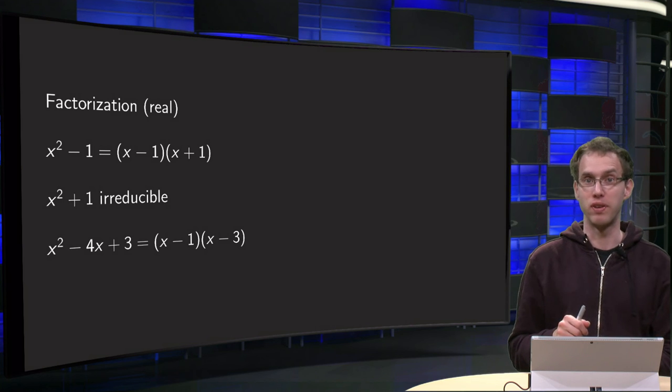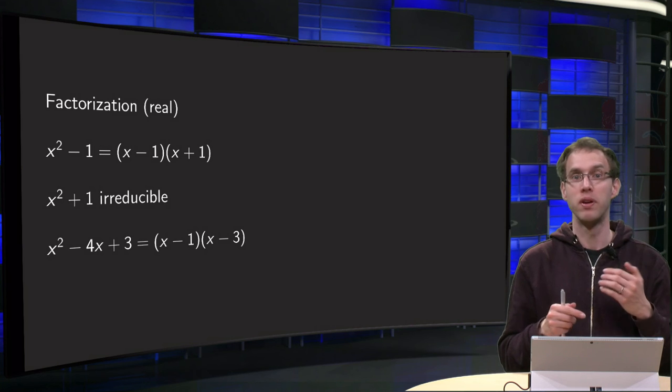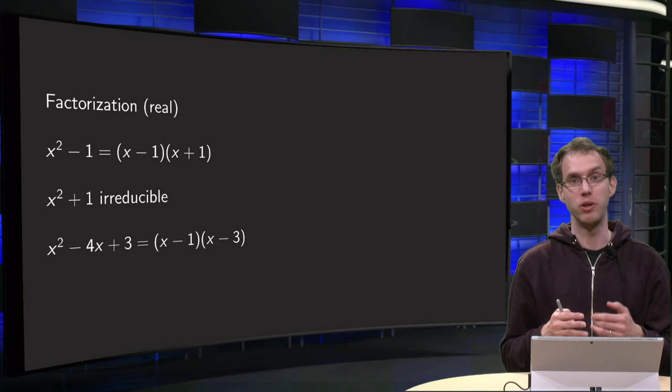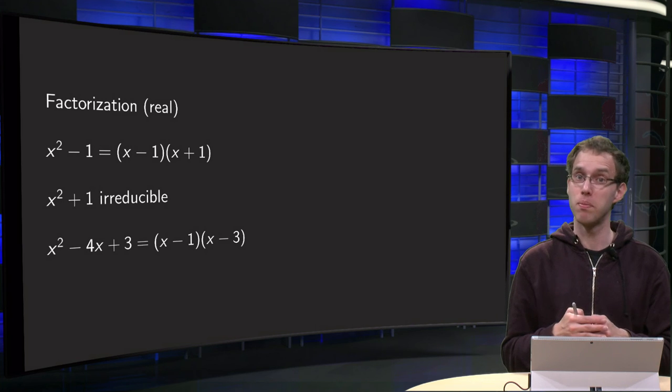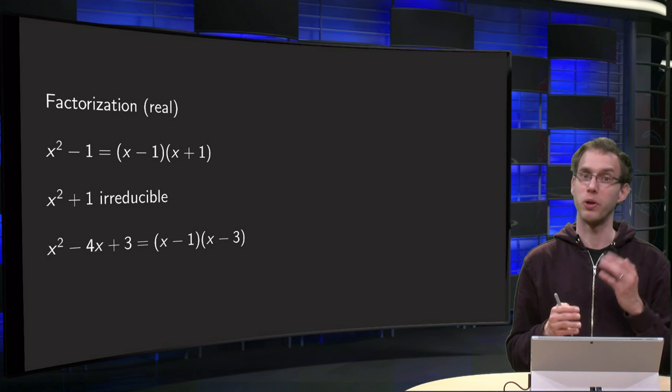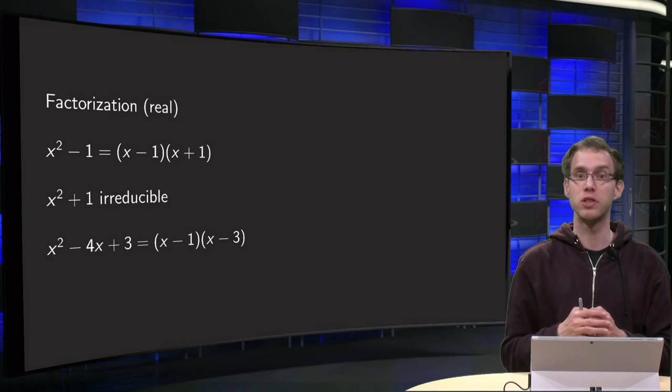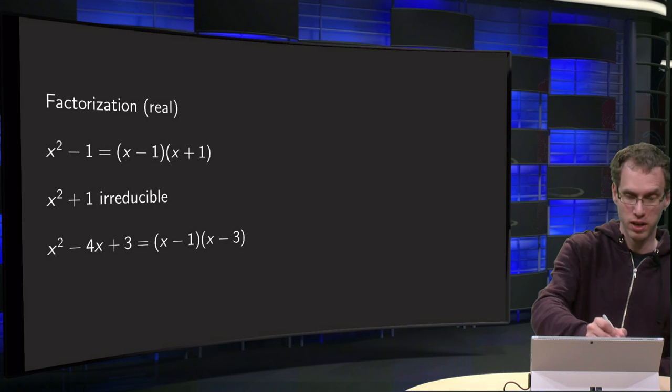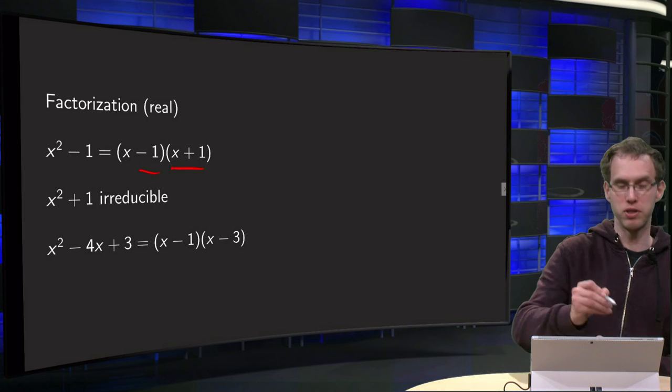x² - 1, how can we split that? Well, it's of the form a² - b², so you know that equals (a - b)(a + b). So how do we split x² - 1? Your a equals x and your b equals 1, so that yields (x - 1)(x + 1).